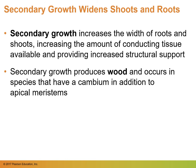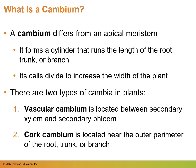Everything we have discussed is about primary growth in a plant — roots, shoots, leaves, and flowers. But there's also secondary growth, which widens shoots and roots, increases the amount of conducting tissue available, and provides increased structural support. Secondary growth produces wood and occurs in species that have a cambium in addition to apical meristems — we're talking about woody plants. Cambium differs from an apical meristem because it forms a cylinder that runs the length of the root, trunk, or branch, and its cells divide to increase the width of the plant. There are two types of cambium: the vascular cambium, located between the secondary xylem and secondary phloem, and the cork cambium, located near the outer perimeter of the root, trunk, or branch.